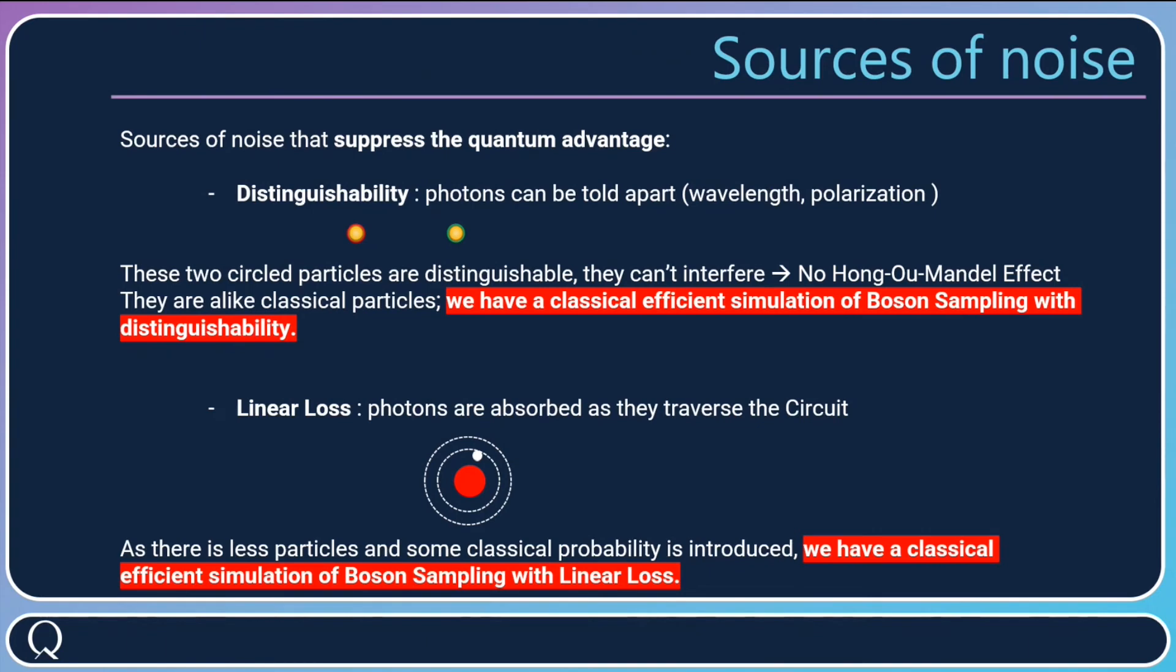So knowing this, what happens with the complexity? As there are fewer particles, and as you introduce some classical probability because you don't know which photon will be lost or not, with these two ingredients you have a classical efficient simulation for boson sampling with linear loss.